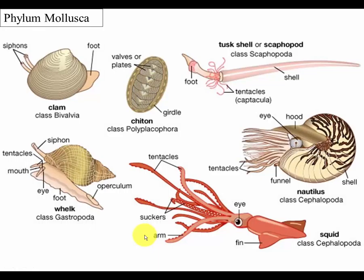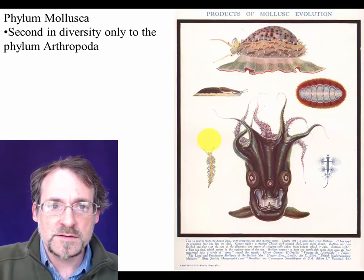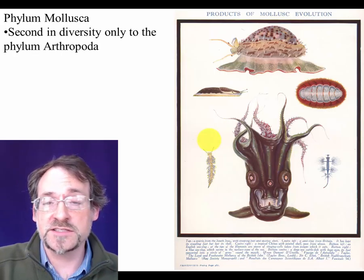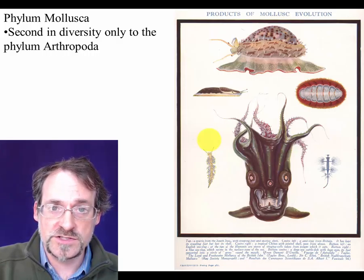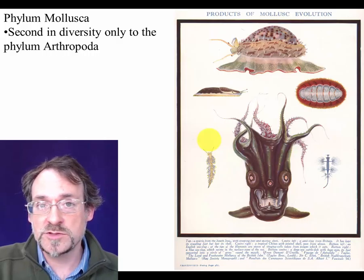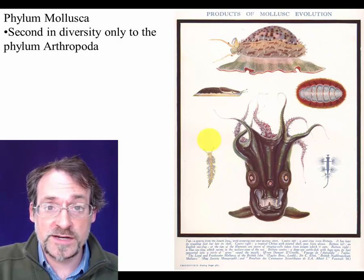In many cases, some of these organisms were not recognized as being even remotely closely related to one another for a very long time. Finally, people noticed that there are similarities in the larval form of many of these organisms that suggested they were actually one another's closest relatives. The mollusks are tremendously diverse. The only phylum more diverse than the mollusks is the arthropods, which we'll be talking about in Friday's lecture.